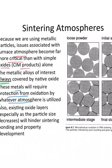Oxide layers become especially important as particle size decreases. For example, if you want to work with 200 nanometer titanium and you open it in air, it'll probably burst into flame because all that titanium will oxidize instantly — potentially the entire particle ends up being oxidized. Add aluminum into it and it's even worse; aluminum oxidizes even more quickly than titanium.